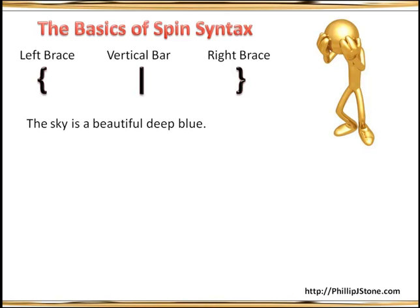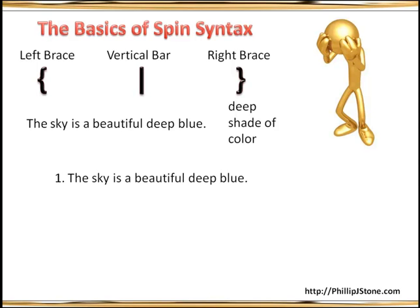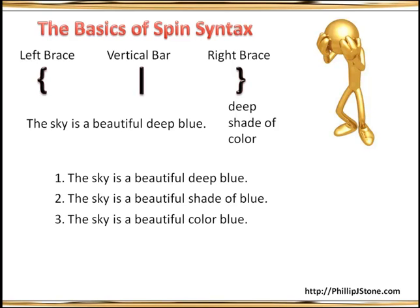Let's say you have a very simple sentence: 'The sky is a beautiful deep blue.' Let's just talk about the word 'deep' right now. We could replace that word with a lot of different options — it could be 'deep,' or it could be 'shade of,' or 'color.' So just using those three words, we'd have three basic different sentences: 'The sky is a deep blue,' 'the sky is a beautiful shade of blue,' or 'the sky is a beautiful color blue.'